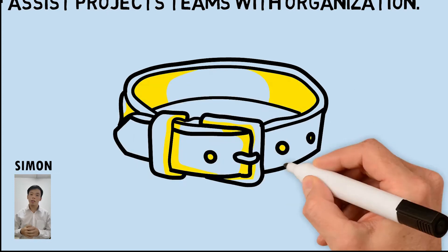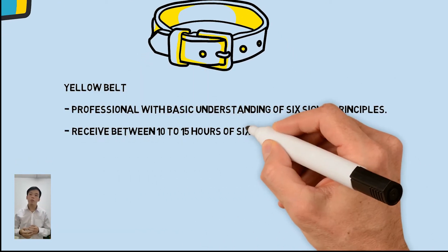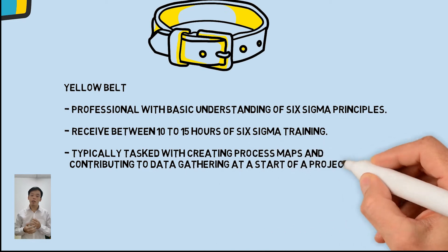White belt is for beginners, those who are fresh to Six Sigma. Yellow belt is for professionals with basic understanding of Six Sigma principles.